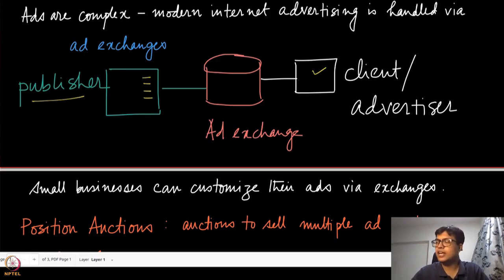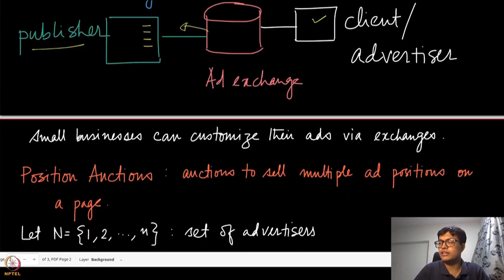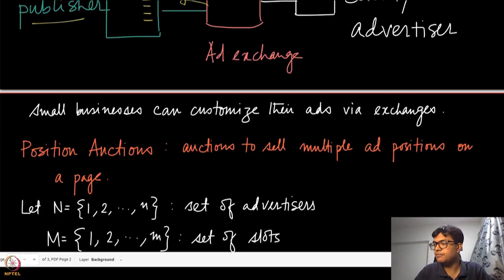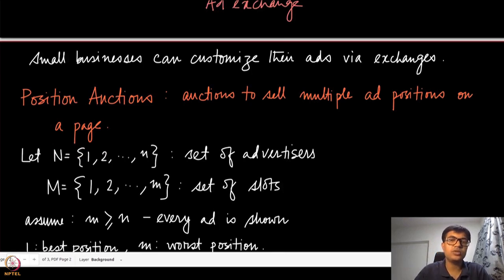Based on the requirements of the advertiser, the ad exchange places automated bids on the publisher side. The ad exchange does the computation and all the decision making of which ad should be shown at which position on the publisher side. The publisher and the client do not have to do a lot of computation. The ad exchange takes care of all this computation and significantly reduces the latency and complexity at each of these places. This is typically used by small businesses who cannot really customize ads on their own, but they can customize their ads via these exchanges.